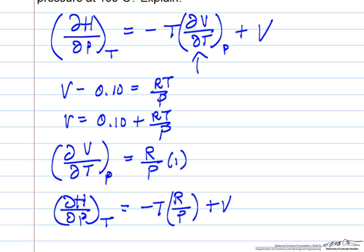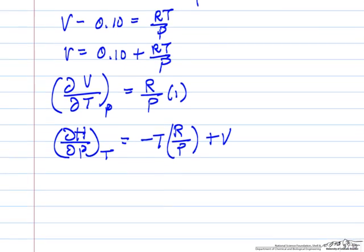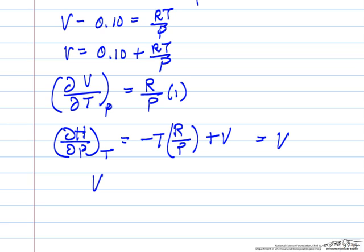If we now go back and look at our equation of state, because this is V minus RT over P, and our equation of state, V minus RT over P is 0.10.